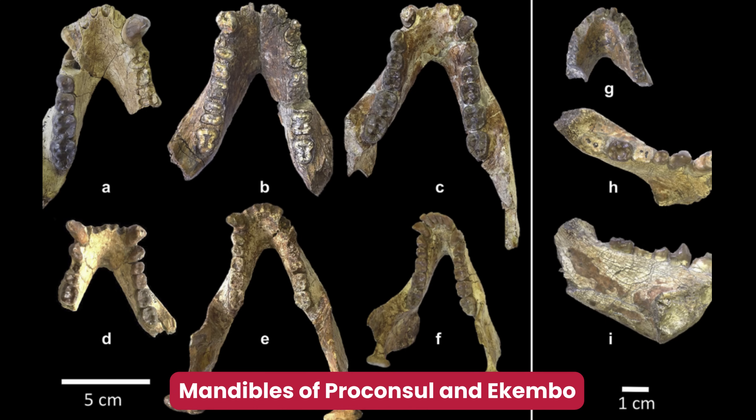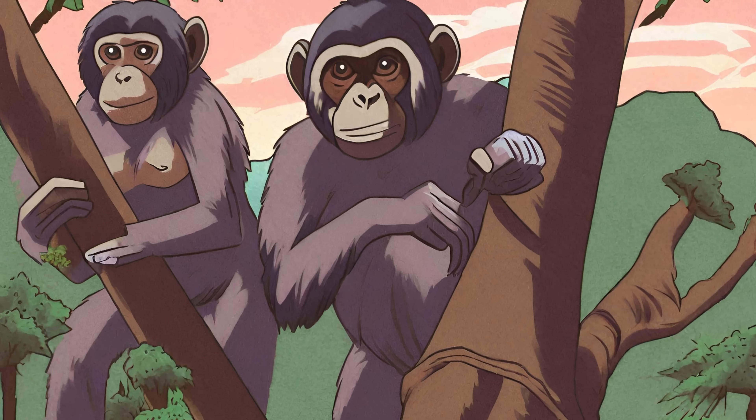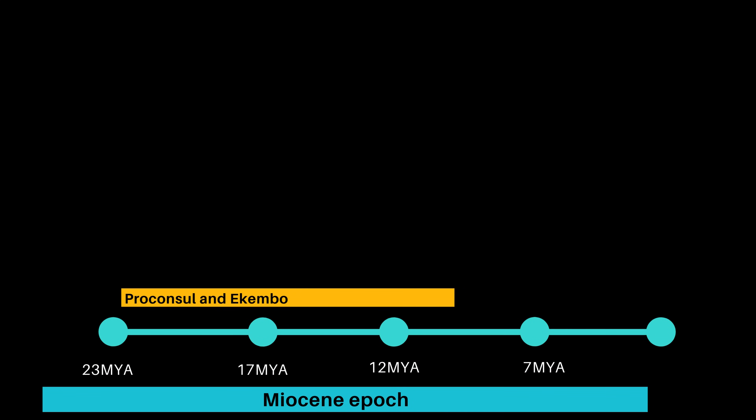Proconsul and Ekembo are the best known of the many fossil apes from the early Miocene of East Africa. They were components of a diverse and successful group which lasted roughly 12 million years, from about 22 to 10.5 million years ago, though mostly known from the early Miocene and becoming rare after about 17.5 million years ago.